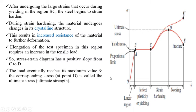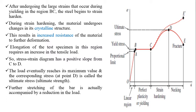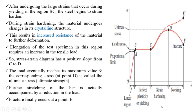The load eventually reaches its maximum value at point D, and the corresponding stress is called the ultimate stress or ultimate strength of the material. Further stretching is accompanied by reduction in load, and finally fracture occurs at point E. The portion from D to E shows that after the ultimate load is reached, the load decreases with further increase in strain — this portion is called necking — and the specimen fractures at E where the test ends.